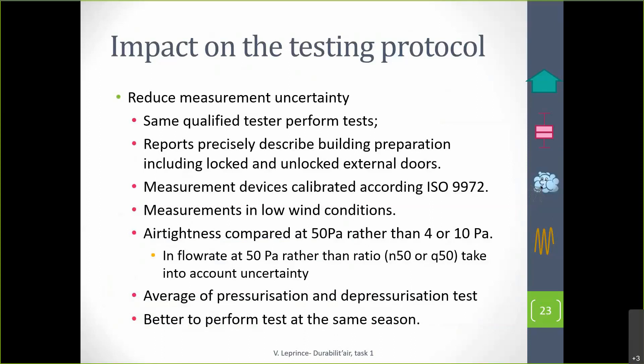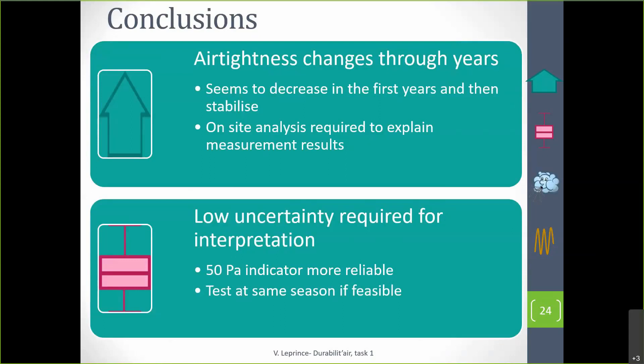However, to reduce measurement uncertainty, it is better to perform the test at the same season when feasible. It is also important to have the same tester perform the test, to prepare the building the same way, to document building preparation precisely so it can be replicated years later, to have devices calibrated, to perform measurements in low wind conditions, to use an indicator at 50 Pascal rather than at 4 or 10 Pascal, and to use the average between pressurization and depressurization tests.